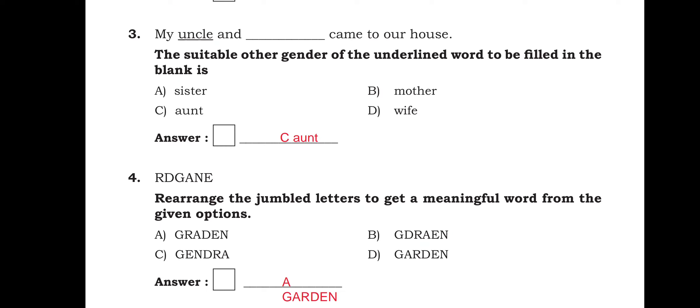My uncle and dash came to our house. The suitable other gender of the underlined word to be filled in the blank is, my uncle and aunt, so option C is the right answer.